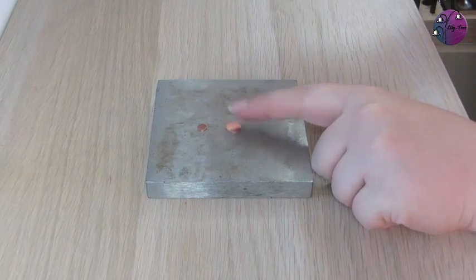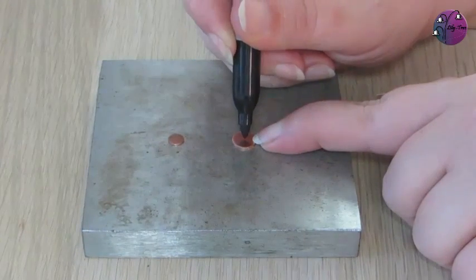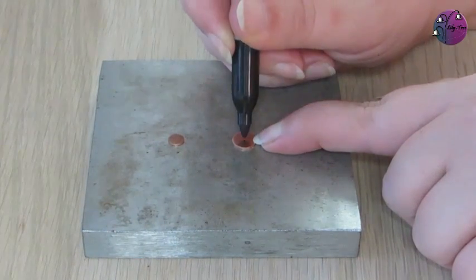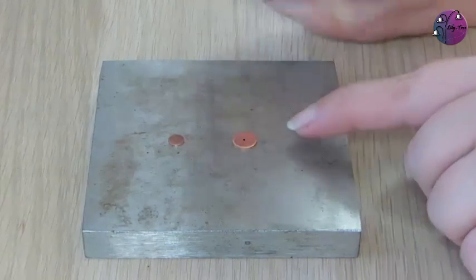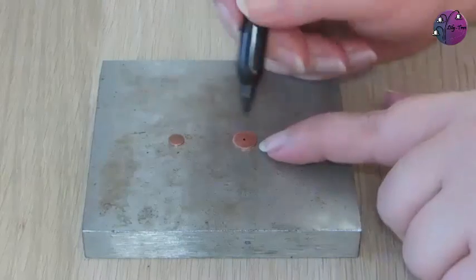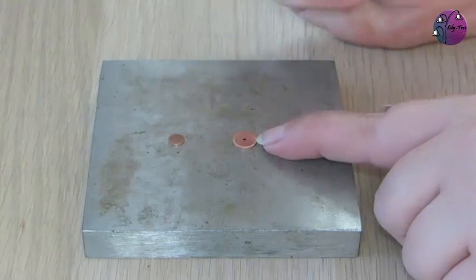We then need to drill a hole in the center of each of the discs and I start by marking the center with a permanent pen. Try to make as small a dot as possible and then if it's a bit off center I can enlarge it until it looks central, and I just judge this by eye.